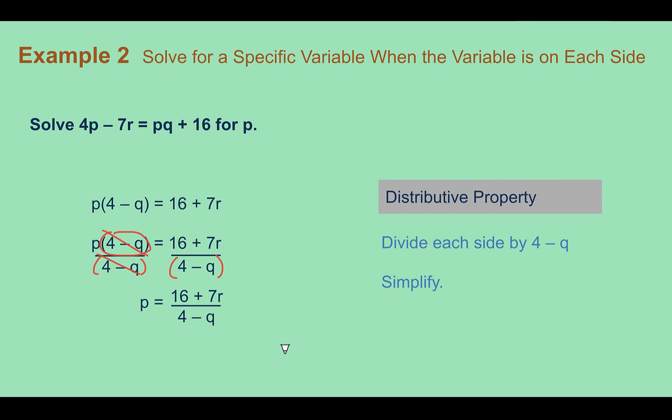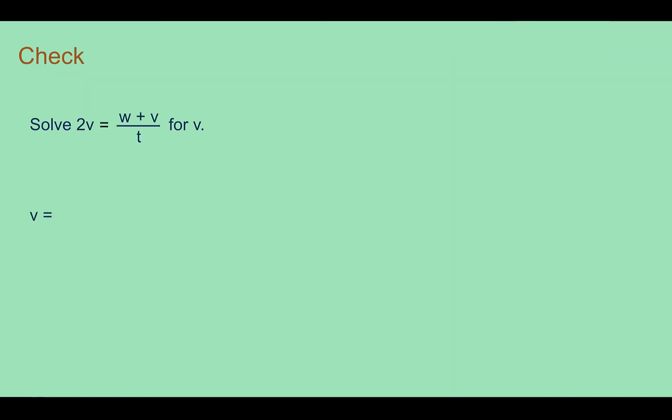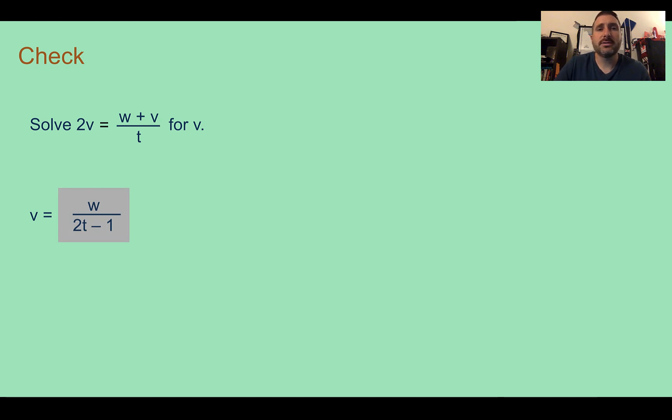Check your understanding: solve 2v equals w plus v all over t for v. Pause the video now and complete the check. Check your answer. You should have said v was equal to w divided by 2t minus 1.